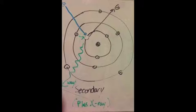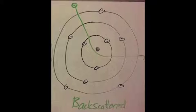Often this hole in the core orbital can be filled with an outer electron, and a characteristic X-ray is emitted, which can be used for compositional analysis. The other type of emitted electrons are backscattered electrons, which are caused by elastic scattering of the incident electron with the nucleus of the sample atom. The energy of the backscattered electron is dependent on the atomic number of the sample atom.